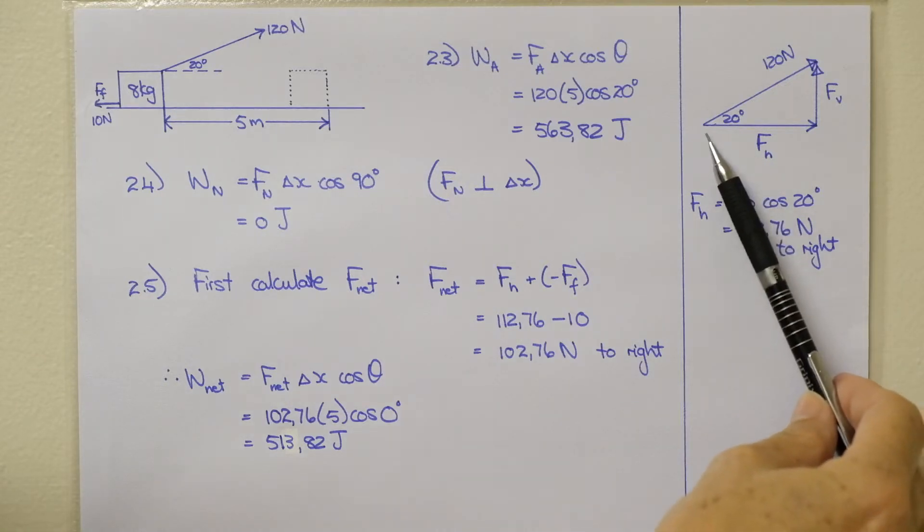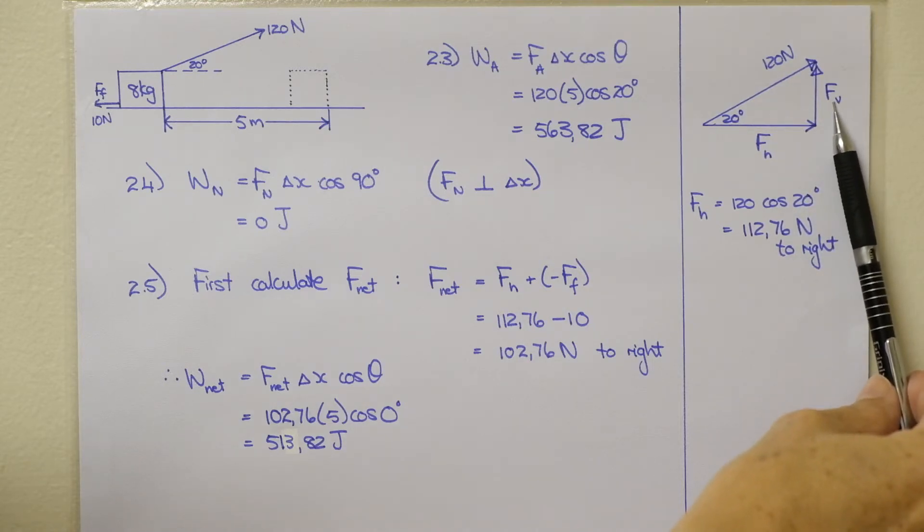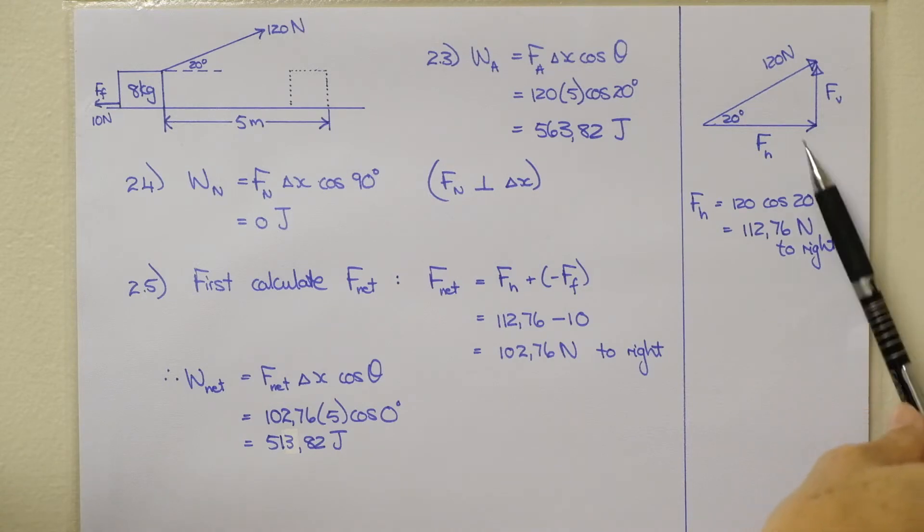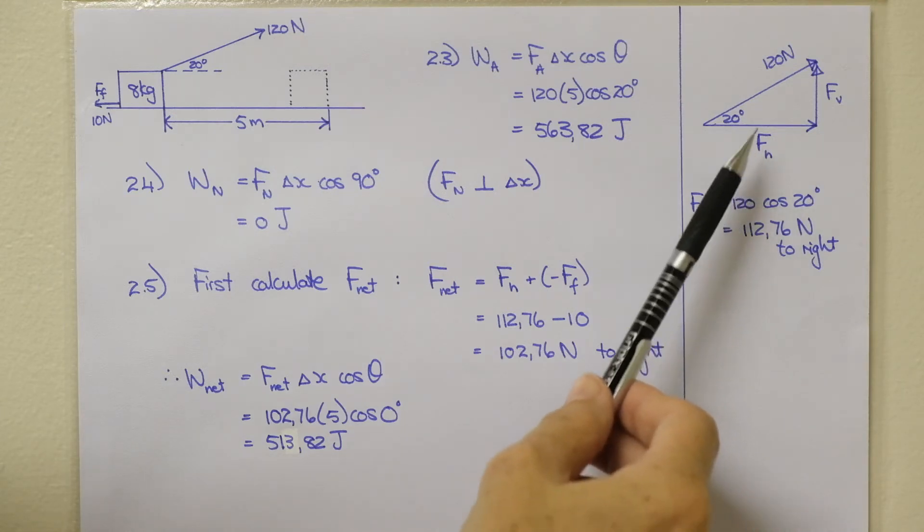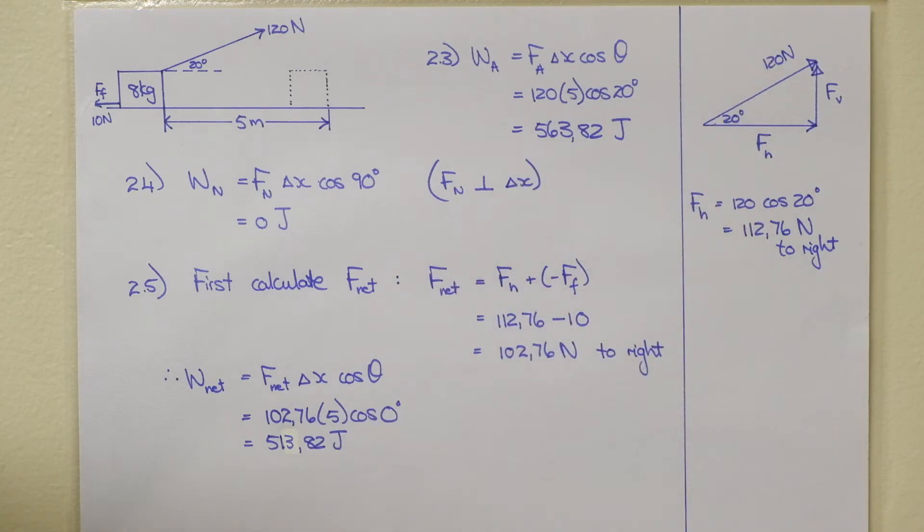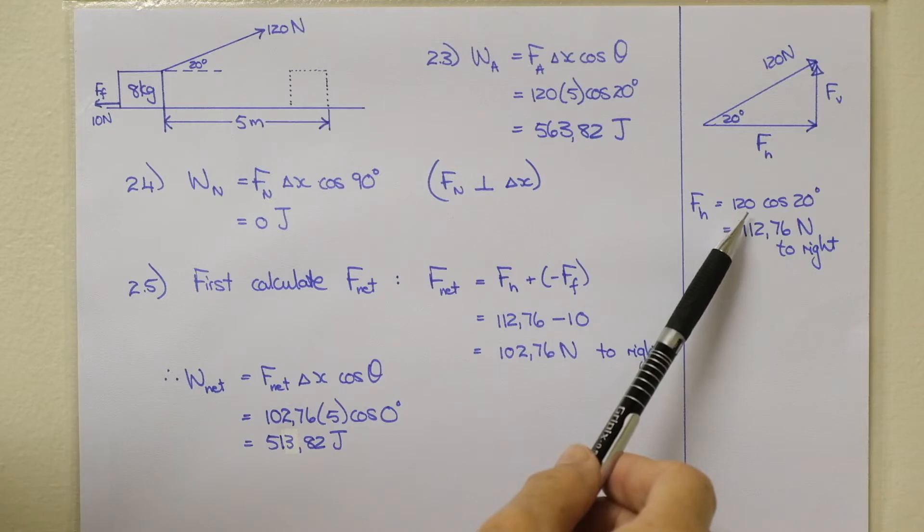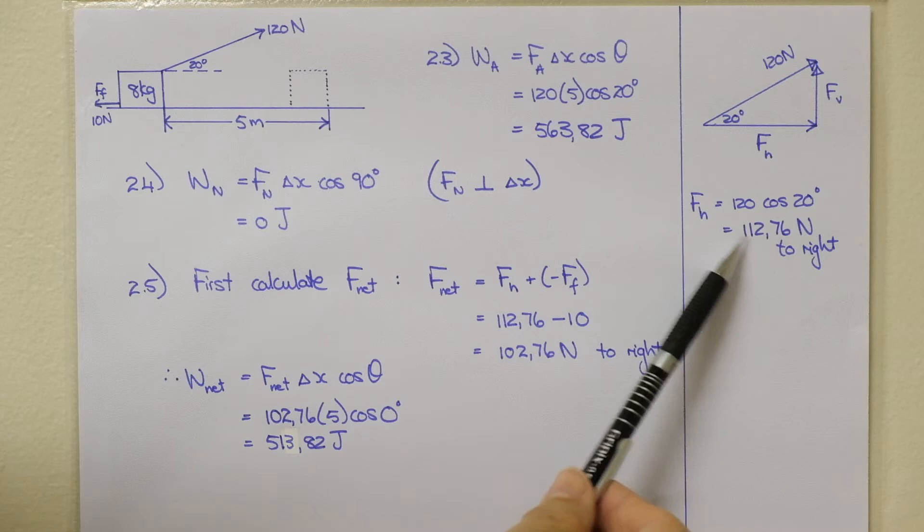The first one is the horizontal component of our applied force. It has a vertical component and a horizontal component. I've used the subscripts V for vertical and H for horizontal. You can use Y and X if you prefer. The horizontal component, I've used cos adjacent over hypotenuse is cos. So F H is therefore 120 times cos of 20 degrees. There's your answer.